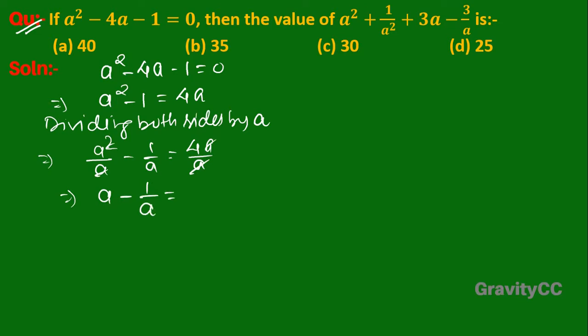Therefore, a² + 1/a² + 3a - 3/a can be rewritten as (a)² + (1/a)² + 3(a - 1/a).